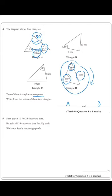Sean pays £10 for 24 chocolate bars. He sells all 24 chocolate bars for 50p each.